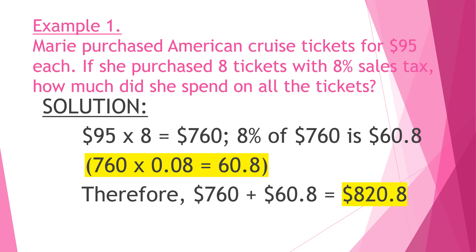Example number one: Mary purchased American cruise tickets for $95 each. If she purchased eight tickets with 8% sales tax, how much did she spend on all the tickets? Solution: 95 times 8 is equal to 760. 8% of 760 is 60.8 — that is when you multiply 760 times 0.08. Therefore 760 plus 60.8 is equal to $820.80, the total amount she spent on all the tickets.